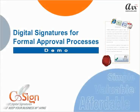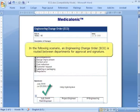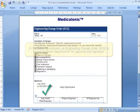Welcome to the CoSign Digital Signature demo for formal approval processes. In the following scenario, an ECO is routed between departments for approval and signature.